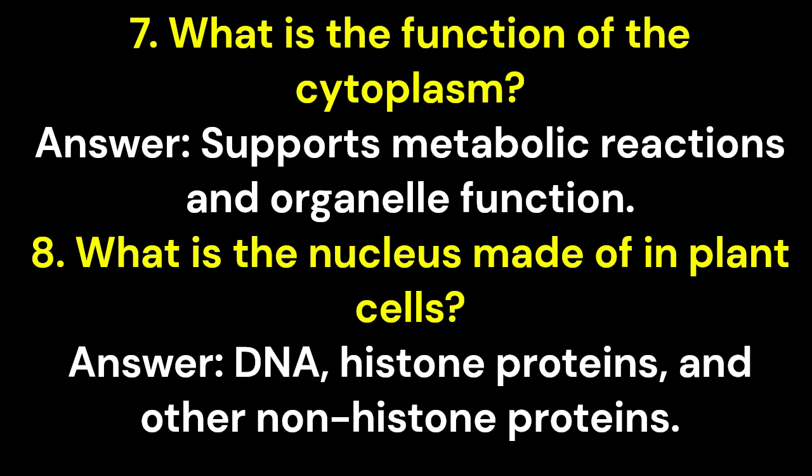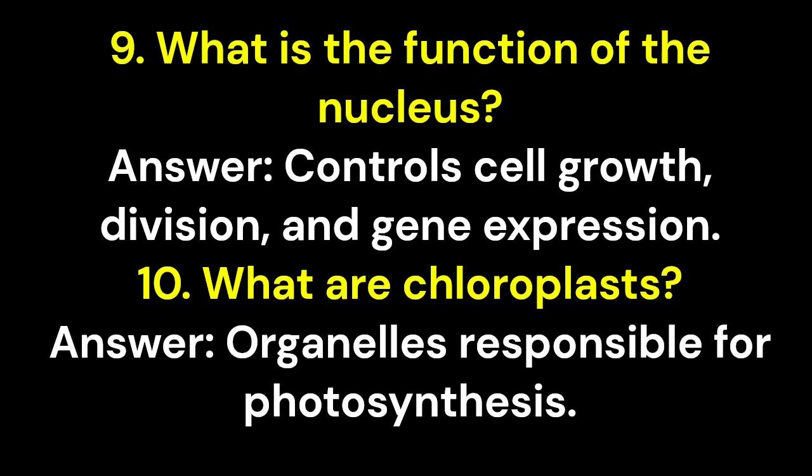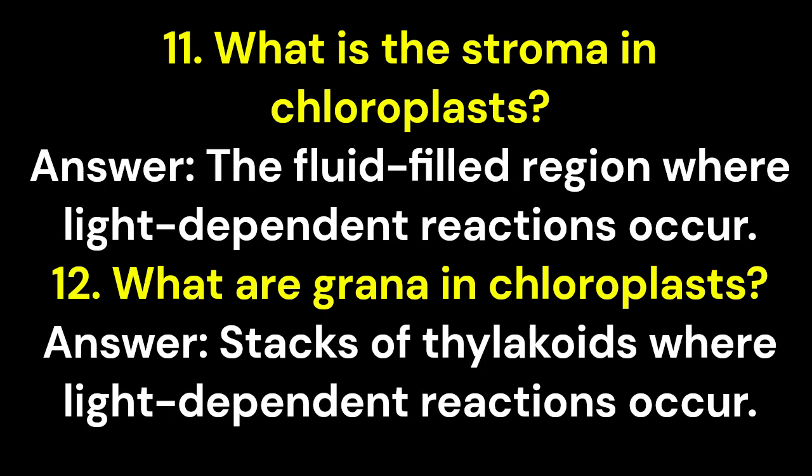8. What is the nucleus made of in plant cells? Answer: DNA, histone proteins, and other non-histone proteins. 9. What is the function of the nucleus? Answer: Controls cell growth, division, and gene expression. 10. What are chloroplasts? Answer: Organelles responsible for photosynthesis.